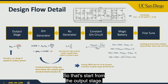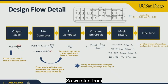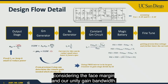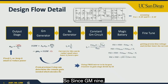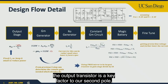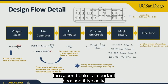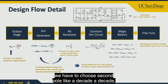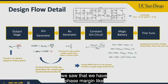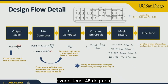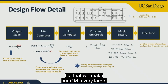Starting from the output stage, we consider the phase margin and unity gain bandwidth. gm9, the output transistor's transconductance, is a key factor for the second pole. Typically, we place the second pole a decade away from the unity gain bandwidth to achieve at least 45 degrees of phase margin.